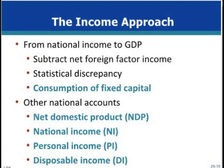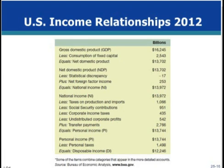The other national accounts provide useful information about the economy's performance. NDP is GDP less consumption of fixed capital. National income is NDP less the statistical discrepancy plus net foreign factor income. Personal income includes all income received, regardless of whether it is earned or unearned. Finally, disposable income is personal income less personal taxes. These tables illustrate the relationship between GDP, NDP, NI, PI, and DI in the United States for 2012.